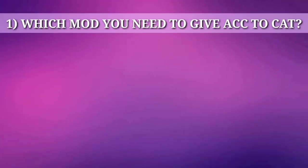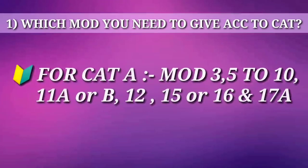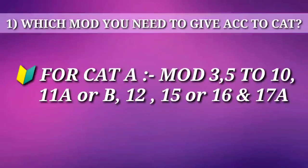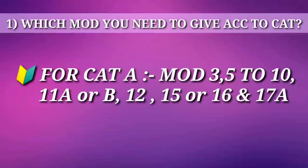Which module you need to give according to categories. For category A, you need to give module 3, from module 5 to module 10, 11A or 11B, module 12, module 15 or 16, and at last module 17A.